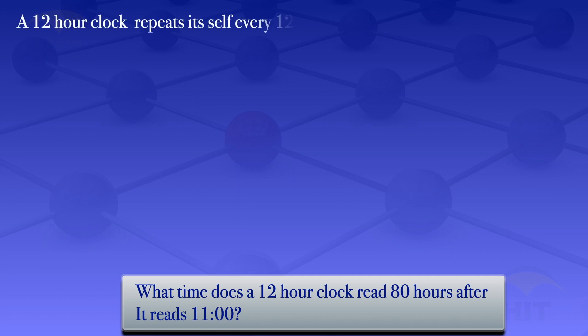A 12 hour clock repeats itself after every 12 hours. In this case we are adding 80 hours to the 11:00. So what we need to find is the remainder when 11 plus 80 is divided by 12. We are finding (11 + 80) mod 12.